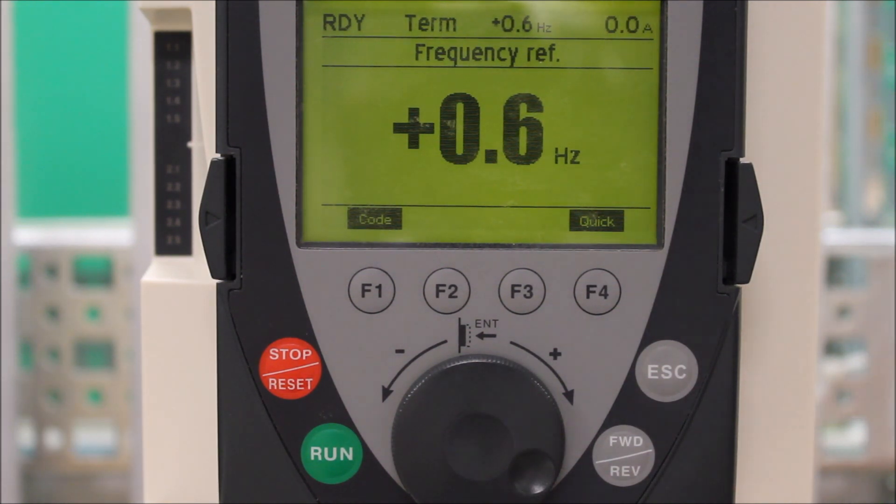The analog outputs on this drive are labeled as AO1, that's your analog output, and you also have the common terminal. There's two types you can set this to: either 0-20 milliamps, 4-20, or 0-10 volt DC. DC and milliamps are your two types, and the milliamp can be adjusted.